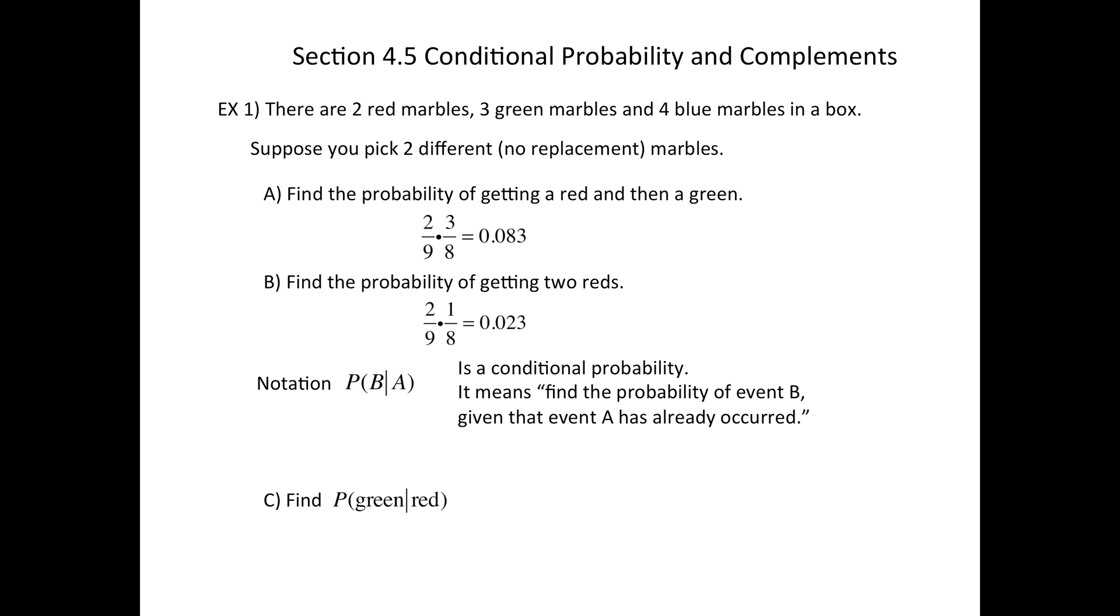For example, C: find the probability you get a green one given that somebody already drew a red. So if somebody already drew a red, that means there's only eight marbles left. And since we're starting all over, there are three green ones out of eight, or 37.5 percent.